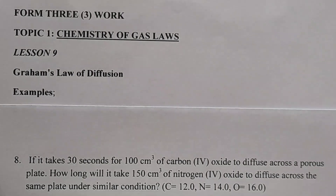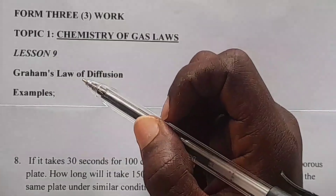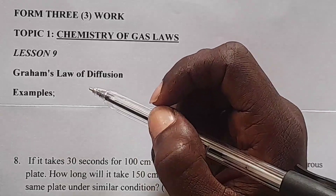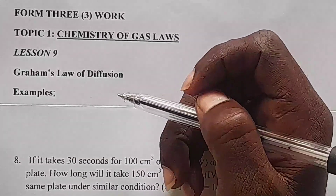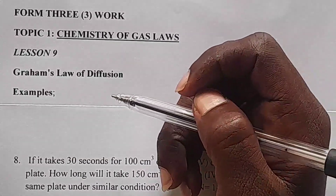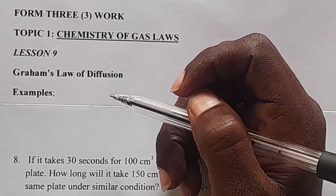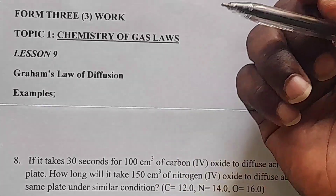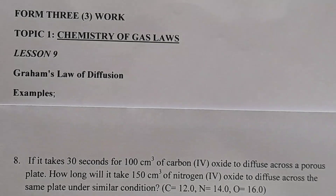Hello, learners. In Form 3, previously we were in lesson 8. We are still dealing with calculations concerning Graham's law of diffusion. We have done questions 1 up to question 7. In this lesson, lesson 9, we are going to be dealing with questions 8 and 9.